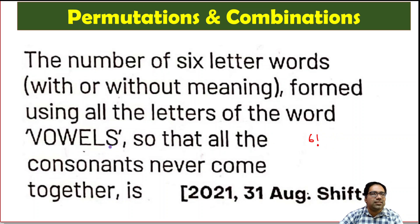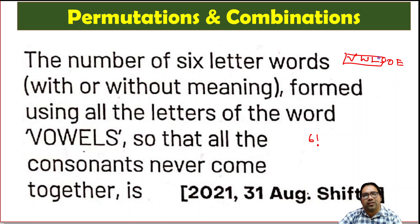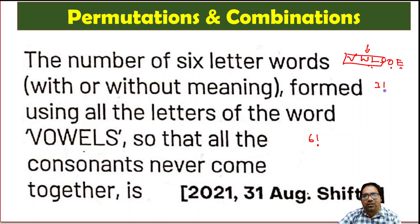Now, of these letters, if we keep all the consonants together, that means V, W, L, S should always be together. The order can be changed within that group, and O and E remain separate. If these four — V, W, L, S — are together, let's say this entire group is one packet. Now we have three different packets: one packet of four letters, one packet of one letter (O), and one packet of one letter (E). So these three packets can be arranged in three factorial number of ways.